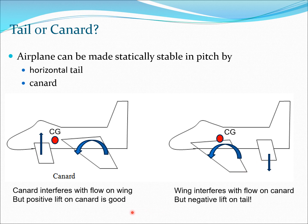The canard has some good and bad points. A negative point is that the canard creates flow deviations that impact the wing. A positive point is that the canard generates positive lift, contributing to the total aircraft lift. In contrast, with a conventional horizontal tail, the wing is in free flow but the wing's downwash impacts the tail, and the tail produces negative lift. So the conventional horizontal tail reduces total lift while the canard adds to it.